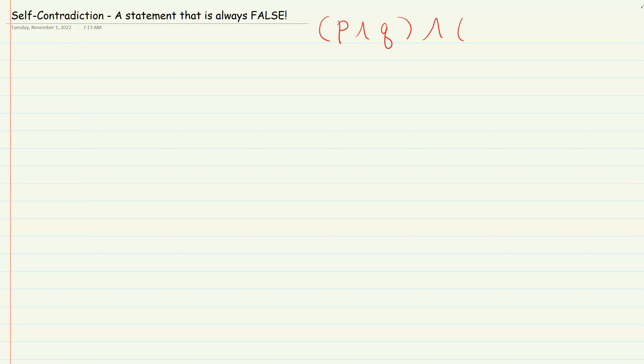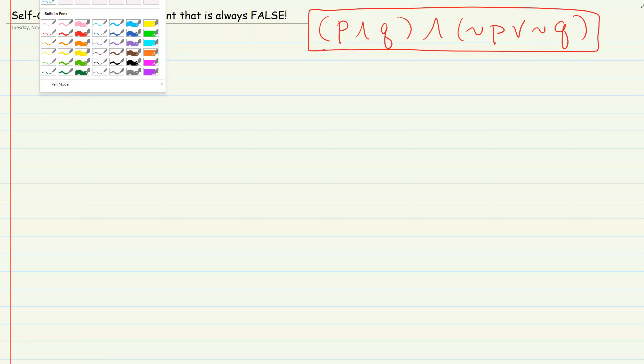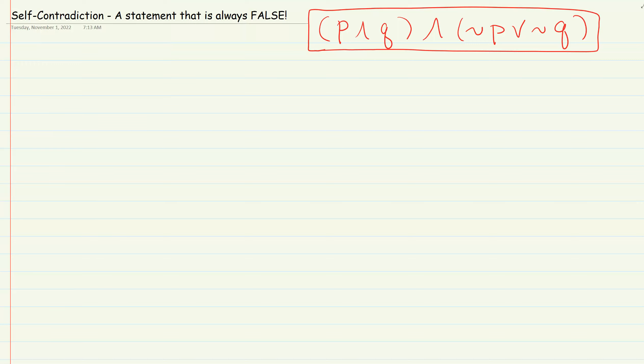What we're gonna do is build a truth table, because a truth table exhibits all the possibilities of truth values. So we can take a look and determine whether it's always false. If it's always false then it's a contradiction. If it's always true then it's a tautology, otherwise it's neither one of them.